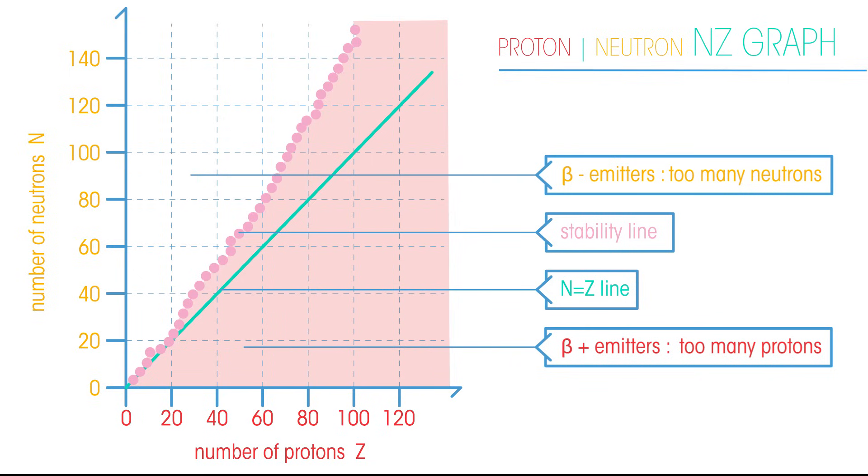If particles have a high number of protons, usually more than 82, they are likely to undergo alpha decay.